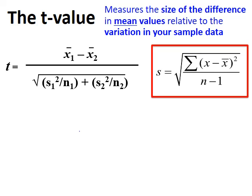In the t-value equation, S1 represents the standard deviation of the first data set and S2 represents the standard deviation of the second data set. The standard deviation shows how the measurements within a group are spread out from the mean value. A low standard deviation means most values are near to the mean, whereas a large standard deviation means the measurements are fairly spread out from the mean. One benefit of using standard deviation is that it uses all values in the data set, not just the extremes.